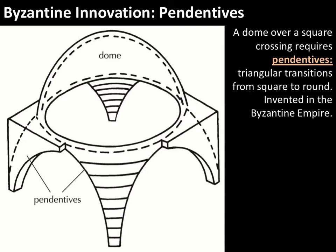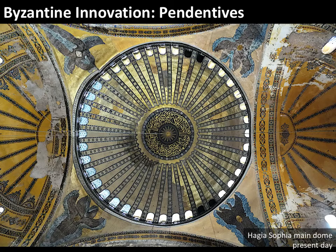When building a dome, you can build it over a cylinder or over a square. Building it over a square makes the geometry tricky. In the Byzantine world, they came up with the idea of the pendentive — that curved triangular shape that holds up the base of the dome, transitioning from the square walls underneath up to the round base of the dome. Looking directly up into the central dome of the Hagia Sophia, you see the triangular pendentives, each with an angel on it, with the dome supported on four massive piers.